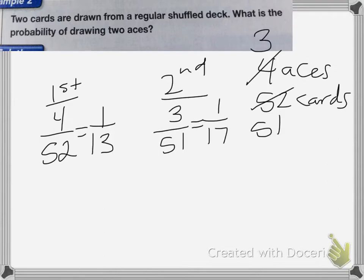Now to find the total probability of getting an ace both times, we're going to multiply 1/13 times 1/17, which is equal to 1/221.